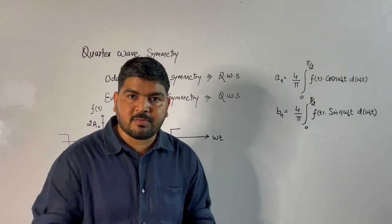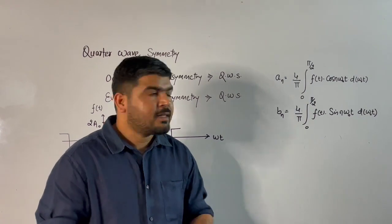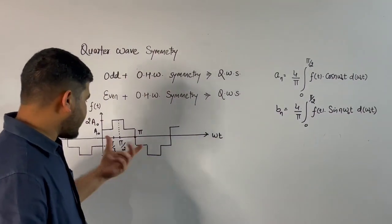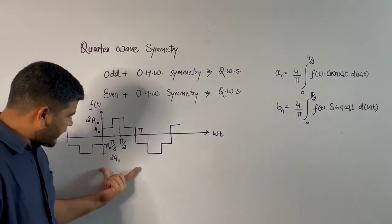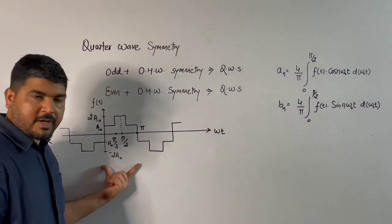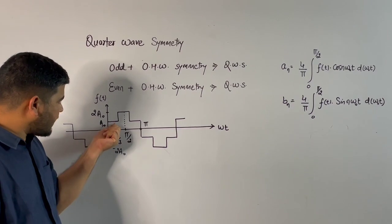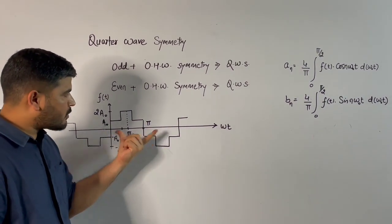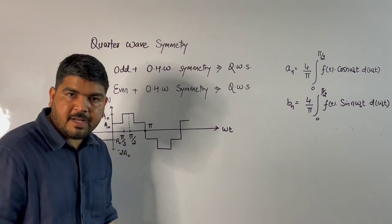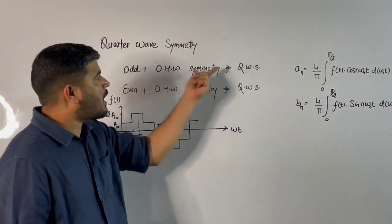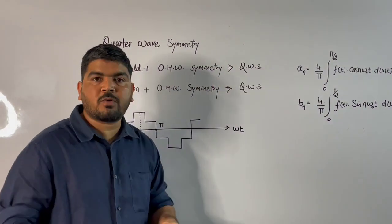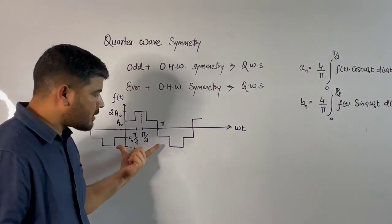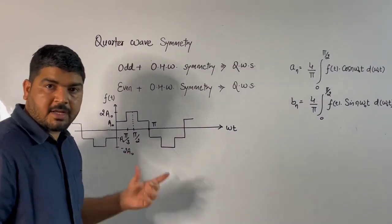What is the advantage of quarter wave symmetry? Looking at this signal, you can see that it is odd and it has odd half wave symmetry. So, odd plus odd half wave symmetry makes quarter wave symmetry, which means this signal has quarter wave symmetry.